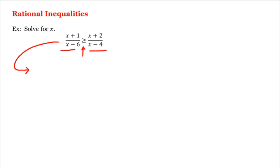So instead we rewrite this inequality by getting 0 on the right hand side. That is, x plus 1 divided by x minus 6, minus x plus 2 divided by x minus 4, is greater than or equal to 0.